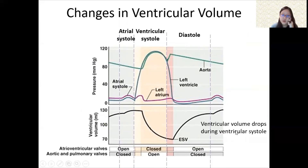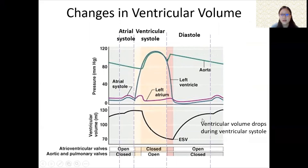Let's talk about ventricular volume across the three stages. Ventricular volume is very high when the heart is not contracting, but during ventricular systole it decreases a lot as blood is pumped out, and during diastole it increases back again. This is inversely proportional to ventricular pressure: when ventricular pressure is low, ventricular volume is high, and when ventricular pressure is high, ventricular volume is low.